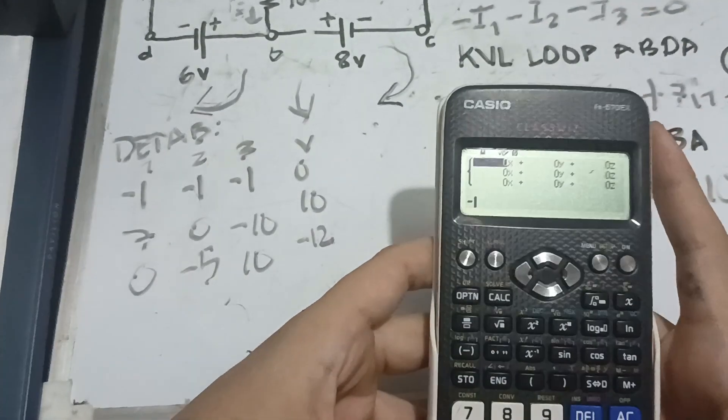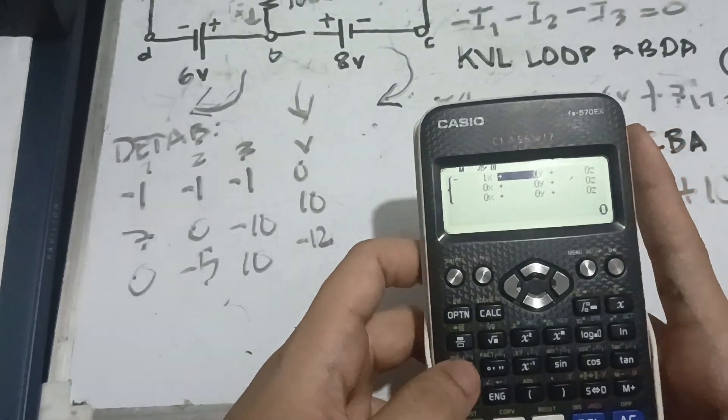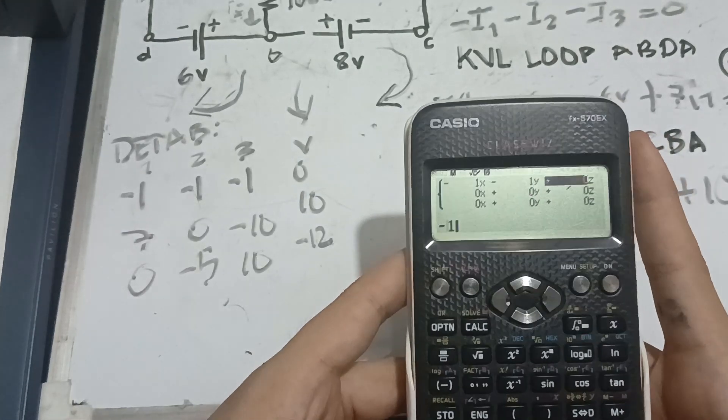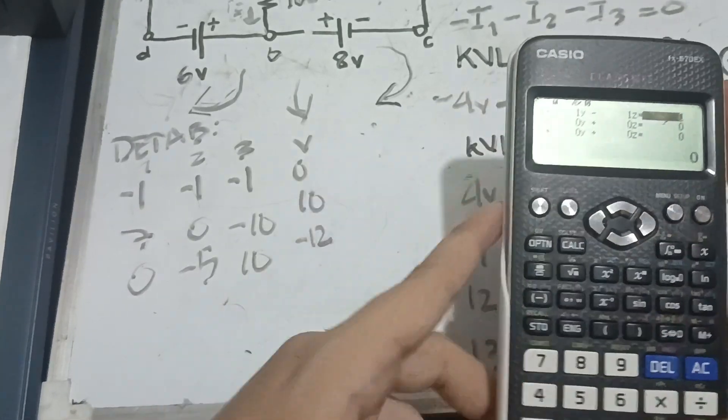So, negative 1. I'm typing the first row. Negative 1 again. And, negative 1. Then, for the last one, 0.